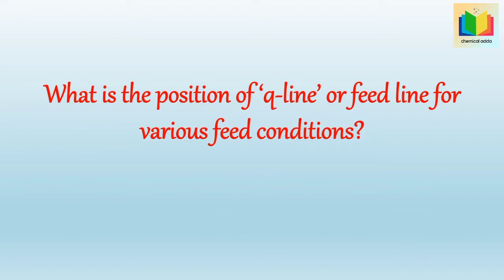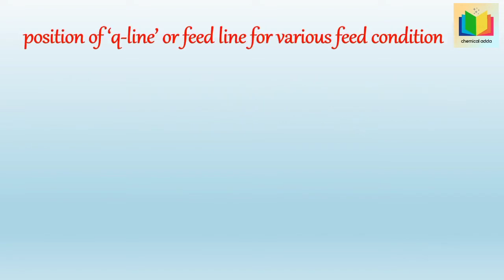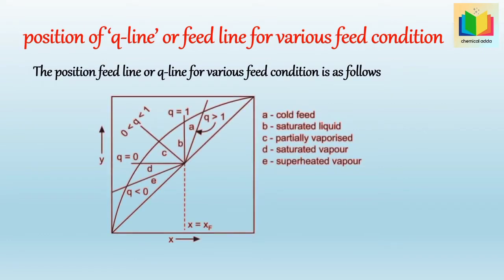What is the position of the q-line or feed line for various feed conditions? The position of the feed line depends on the nature and value of q. For cold liquid, q is greater than 1, so the feed line passes through (xf, xf) on the diagonal with slope −q/(1−q). For saturated liquid at the bubble point, q equals 1, giving slope equal to infinity, so the feed line is parallel to the y-axis through (xf, xf).